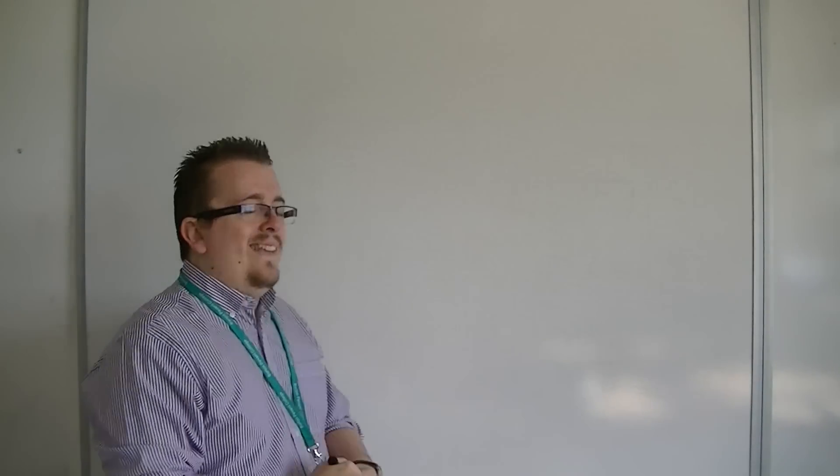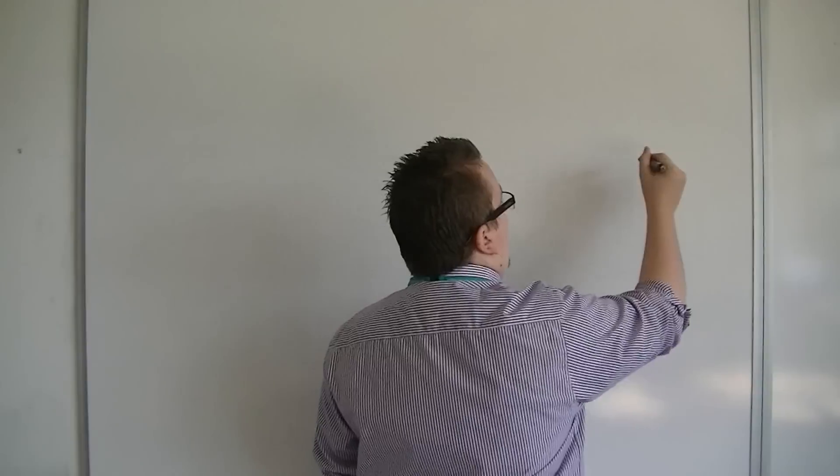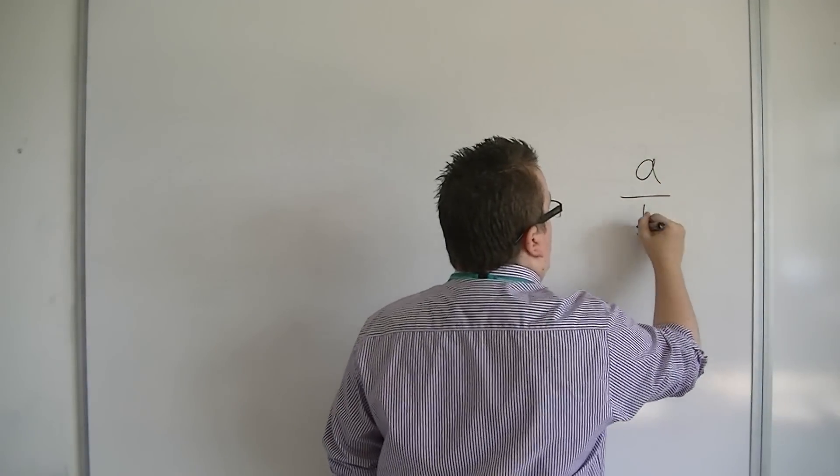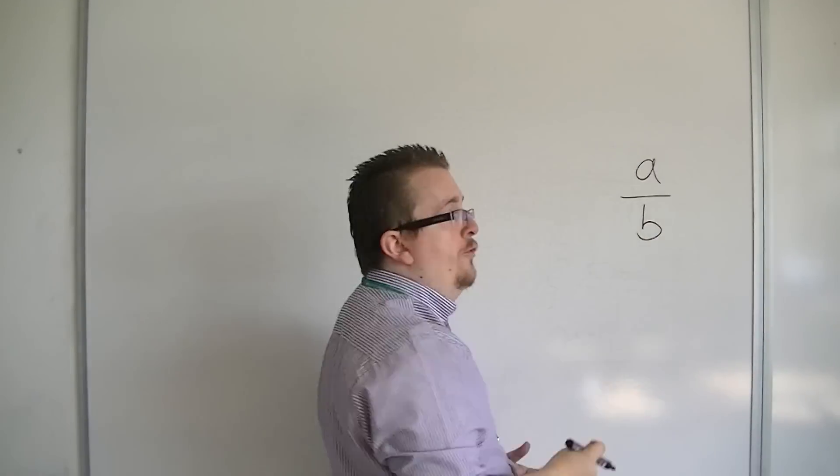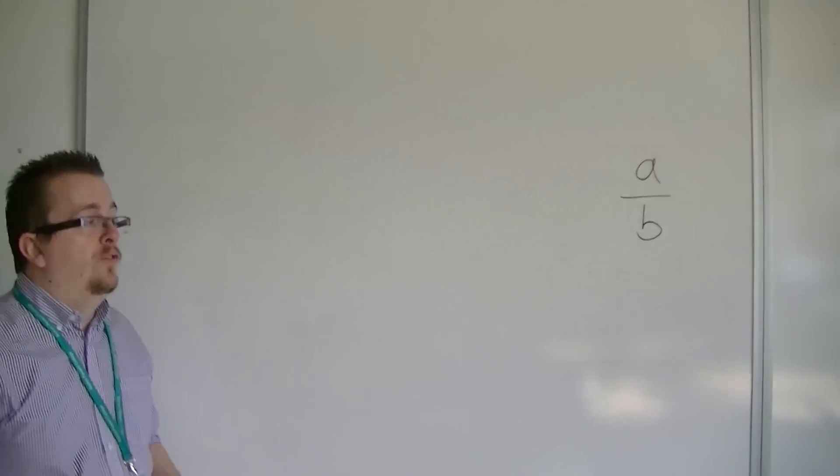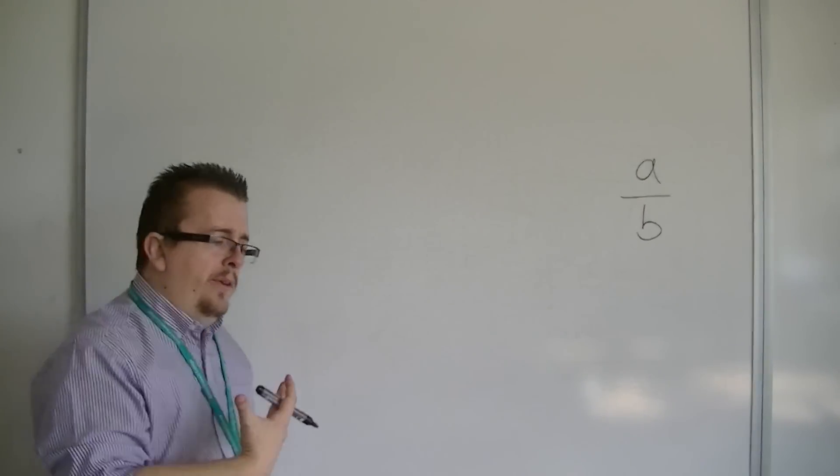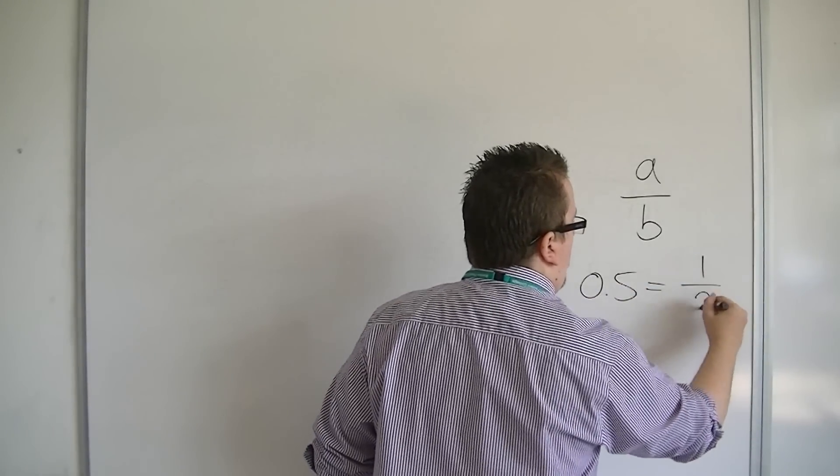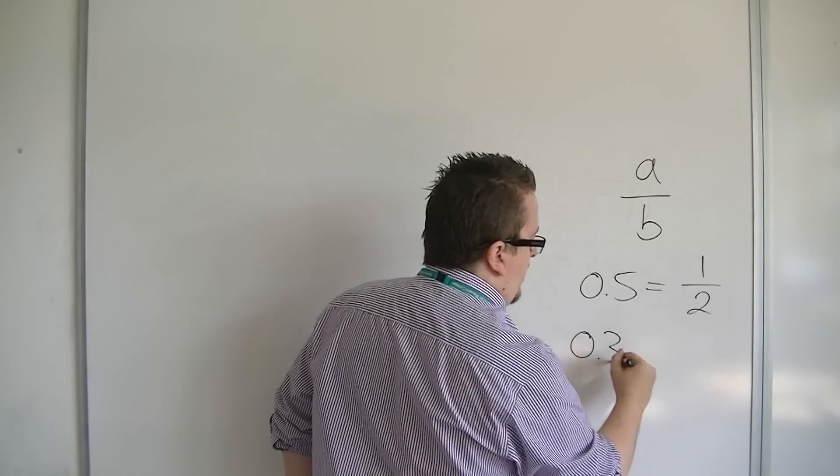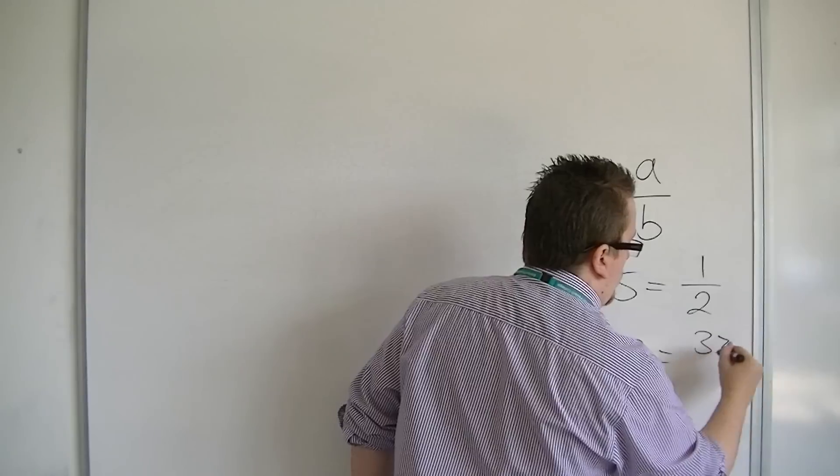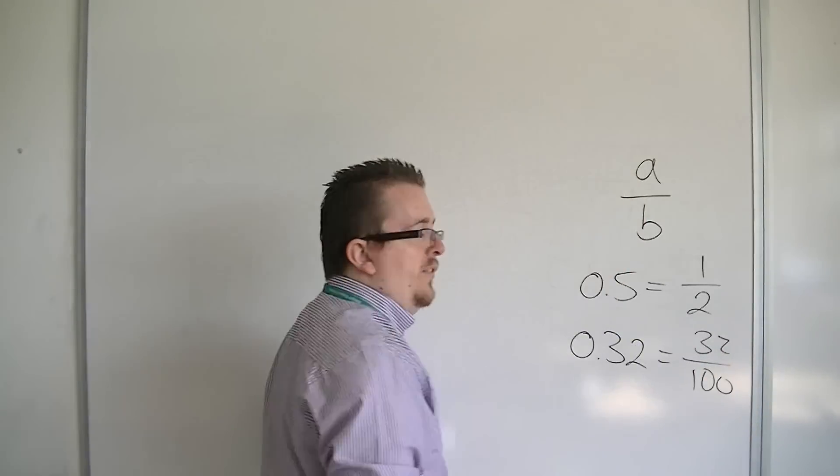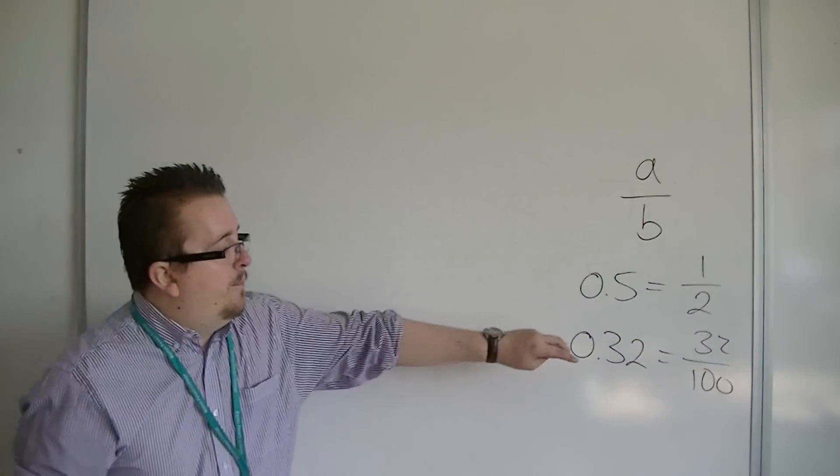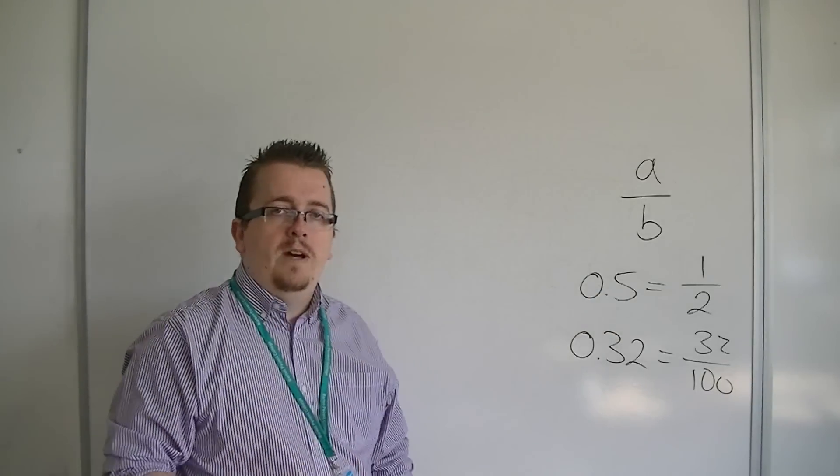A rational number is any number that can be written as a fraction, so one whole number over another whole number, a over b. So numbers like 0.5 can be written as one half, and 0.32 can be written as 32 over 100, which can then be simplified. But these are both examples of rational numbers.